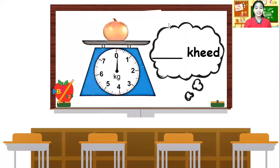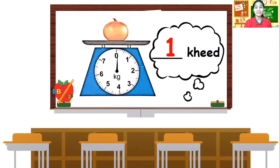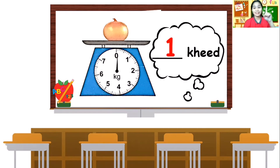Next is onion. Let's measure the mass of the onion. Where does the arrow point in? It is pointing at one. Very good! That is one hg.